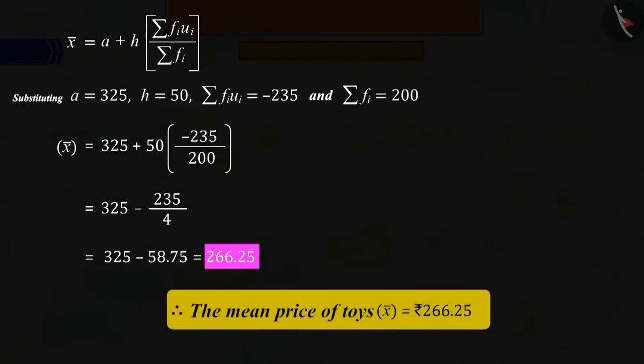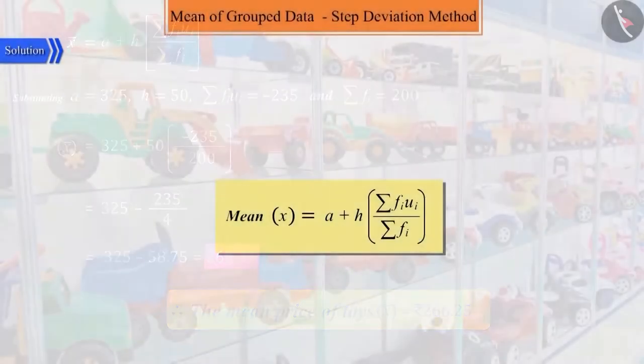So we can say that the mean of the toys would be 266 rupees and 25 paise. This method of finding the mean is called the step deviation method.